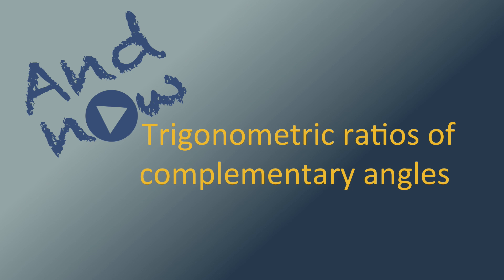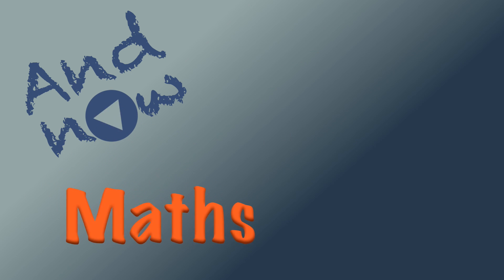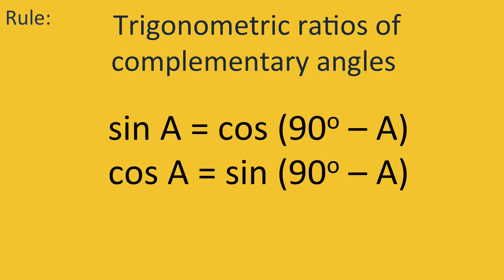Trigonometric ratios of complementary angles. The sine and cosine ratios of complementary angles are related by the following: sine of a equals cosine of 90 degrees minus a, cosine of a equals sine of 90 degrees minus a.